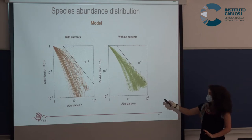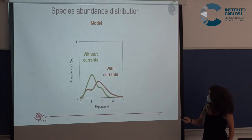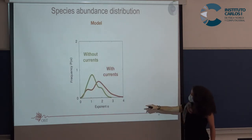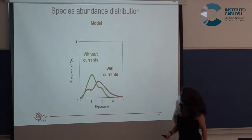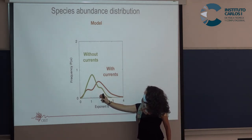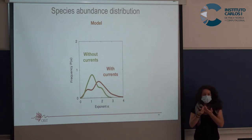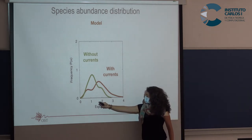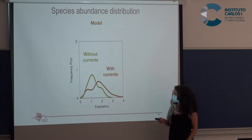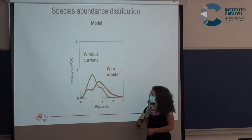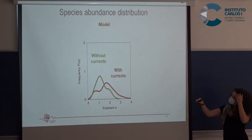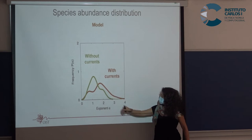To quantify this more clearly, we represent the exponent alpha of our curves and measure the distribution of these exponents. Although there are some areas where you cannot distinguish, there is a clear separation — the variance in the exponent is very large, implying big differences. The distribution of exponents without currents and with currents is clearly different, and the exponent is higher with currents.